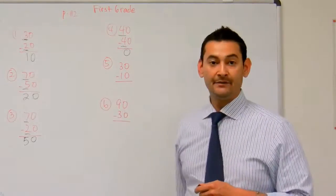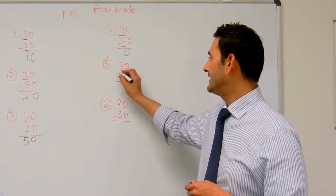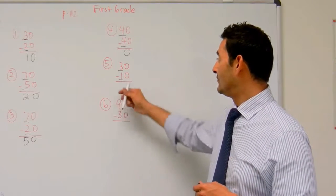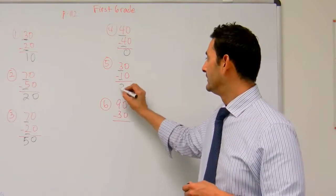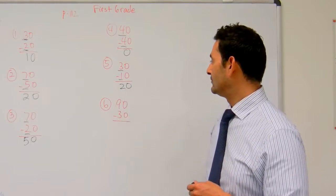Let's take a look at number 5. Here we have 30 minus 10, look at the tens place. We have a 3 and a 1. We're going to do 3 minus 1, which is 2. 30 minus 10 equals 20.